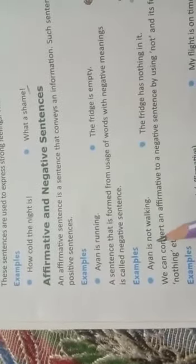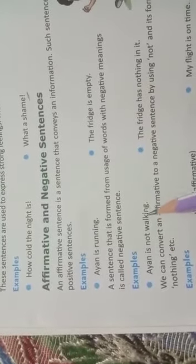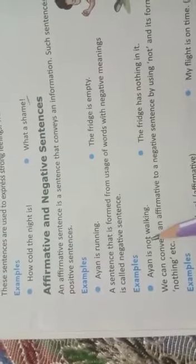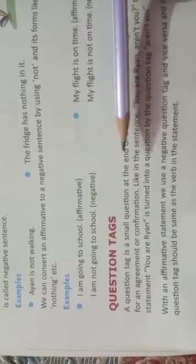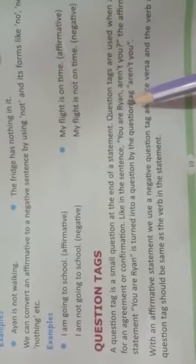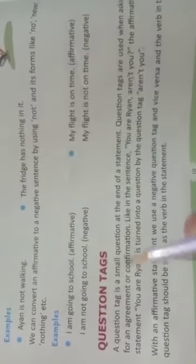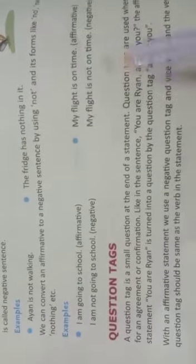Negative sentences use 'not' — for example, 'Iron is not walking.' This is a negative sentence. Next are question tags. A question tag is a small question added at the end of a statement. This small question appears at the end of the statement.